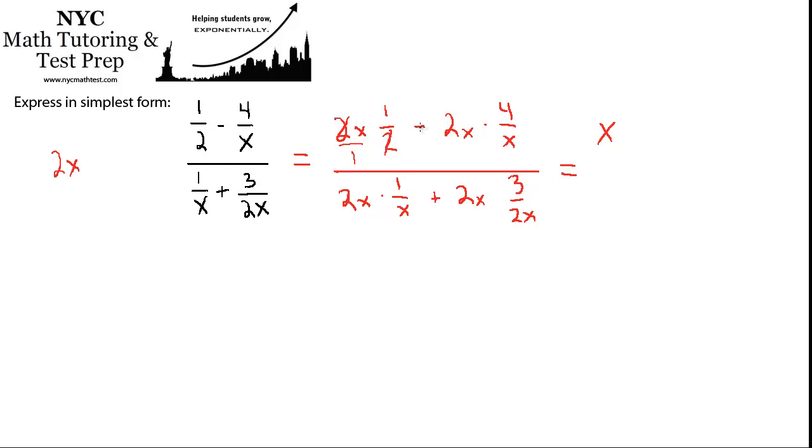What about over here? We have 2x—you can imagine that that's over 1. So numerator times numerator, we're going to end up with 8x over 1 times x, which is x. So 8x over x is just 8. So this is minus 8.